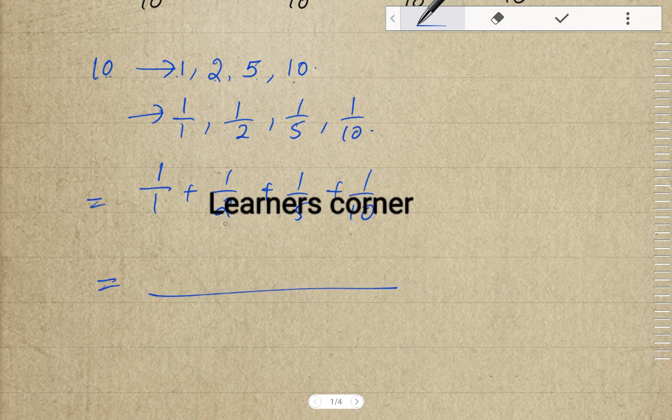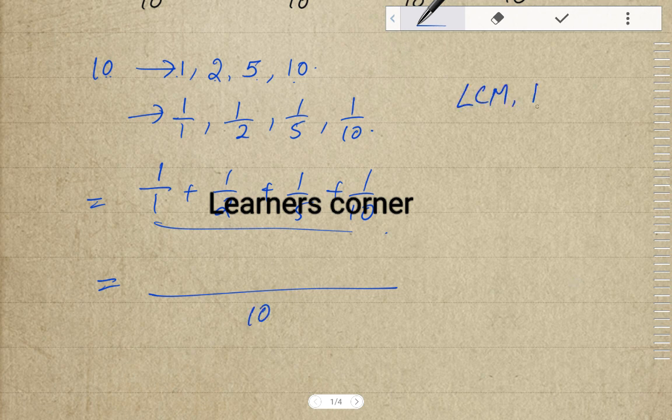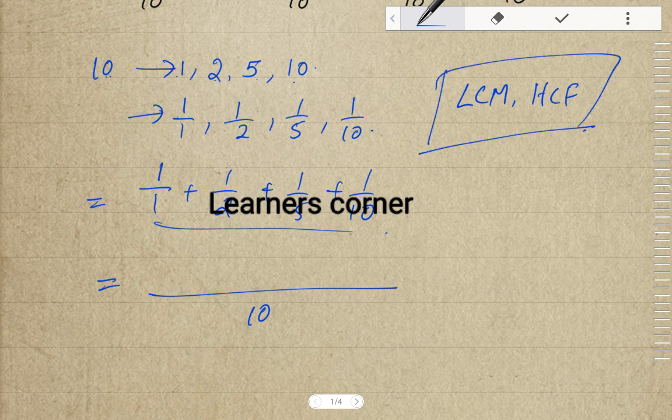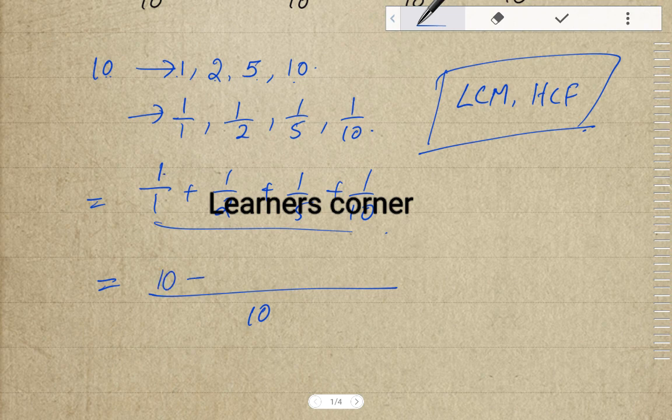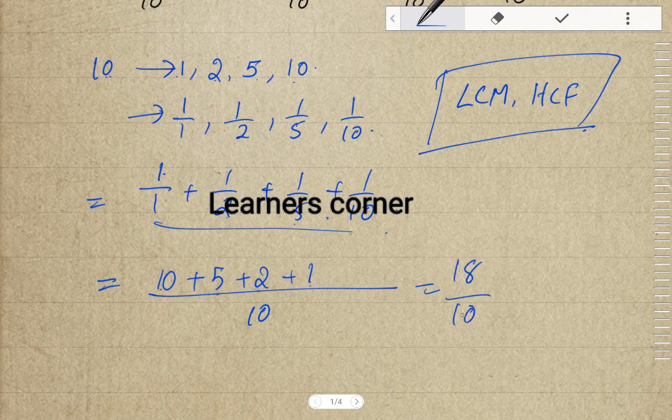This requires LCM. The LCM is 10. So we get: 10 times 1 is 10, plus 5 is 15, plus 2 is 17, plus 1 is 18. The answer is 18/10.